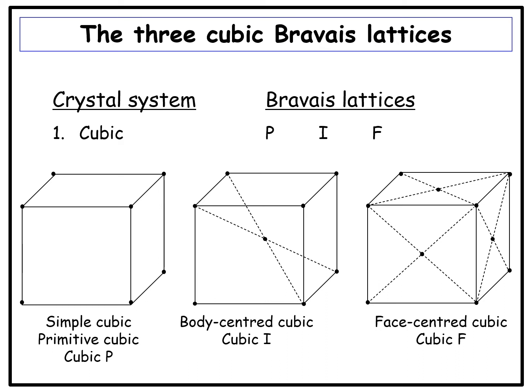In face-centered cubic, there is no lattice point at the center of the cube. These are the three cubic Bravais lattices. The meaning of P, I, and F for other lattices is identical — whenever we have I or body-centered, there will be a lattice point at the center of the unit cell, and whenever we have F or face-centered, there will be lattice points at the centers of all the faces of the unit cell.